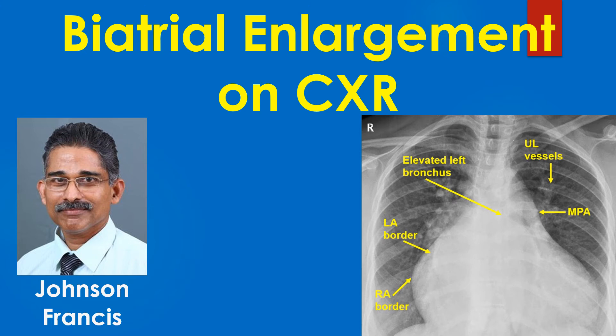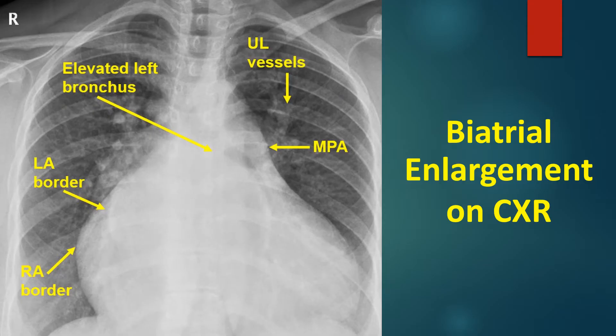Bi-atrial enlargement on chest X-ray causing cardiomegaly with a right ventricular pattern of apex, which is lifted up, is discussed here. Right atrial enlargement is evidenced by the shift of the right cardiac border grossly to the right side. Left atrial enlargement is seen as a double contour within the right atrial shadow — a shadow within shadow.